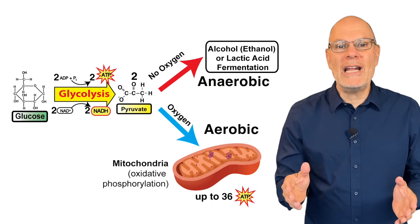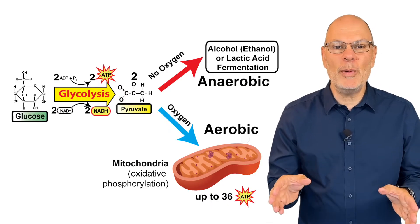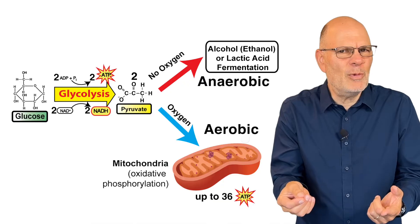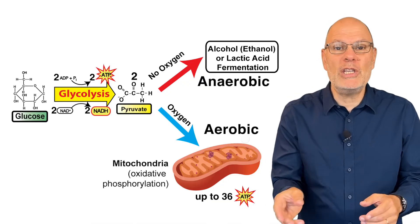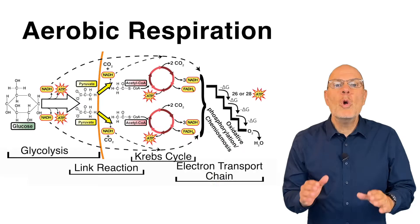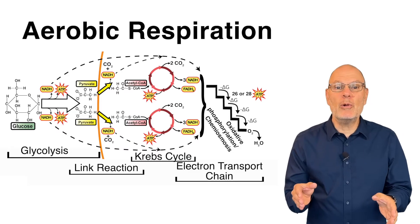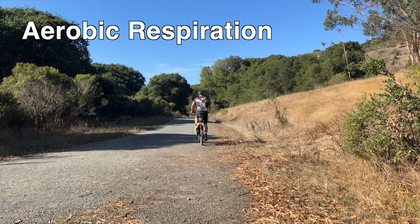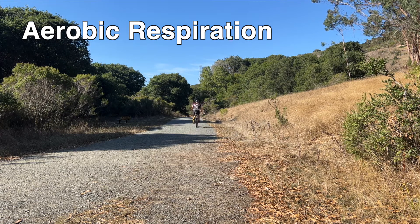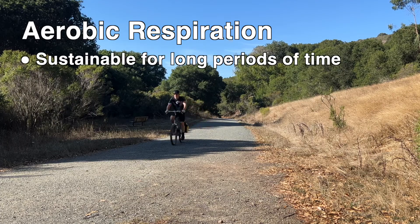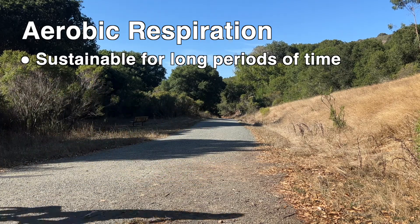Humans, like all animals, frequently carry out anaerobic respiration, but it's not our main form of respiration. That's aerobic respiration, which requires oxygen. When our cells have sufficient oxygen, they'll do aerobic respiration. That's what I'm doing when I'm riding on this flat road — I could bike like this all day, and that's a hallmark of aerobic respiration: it's sustainable for long periods of time.